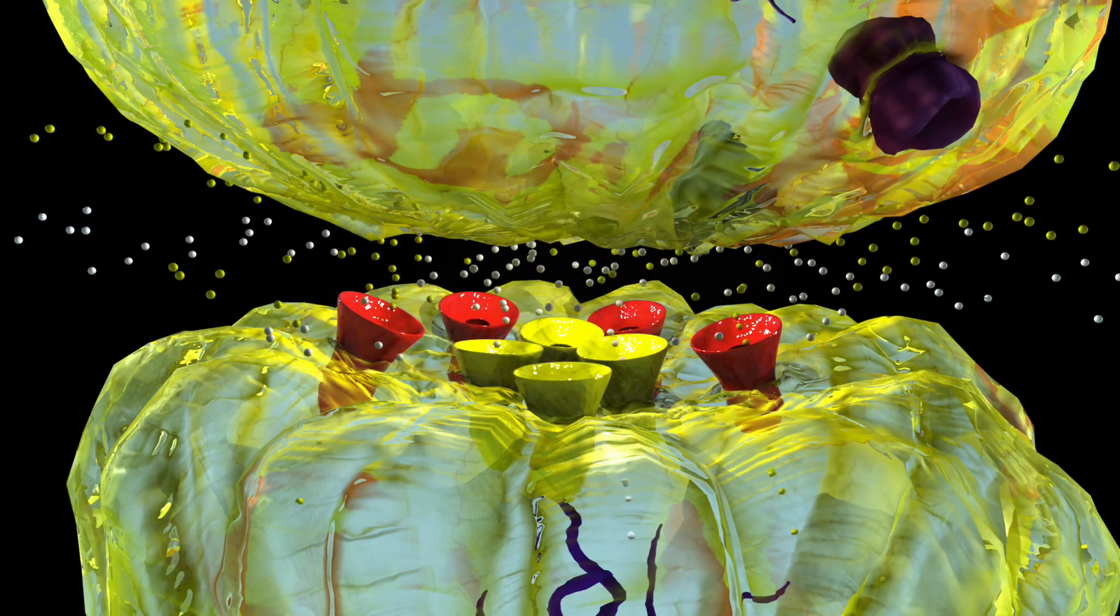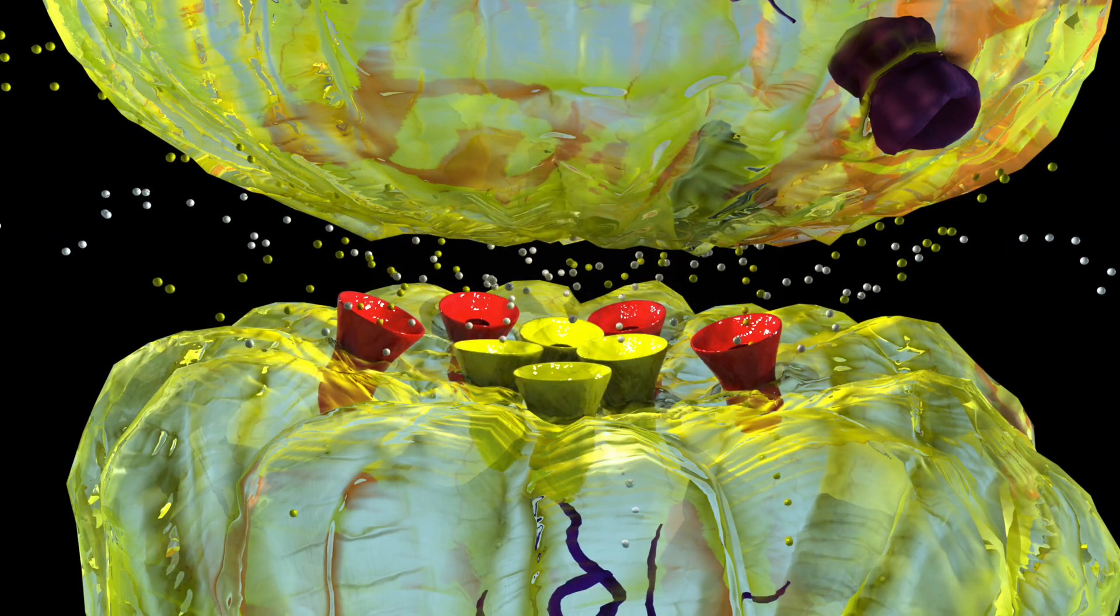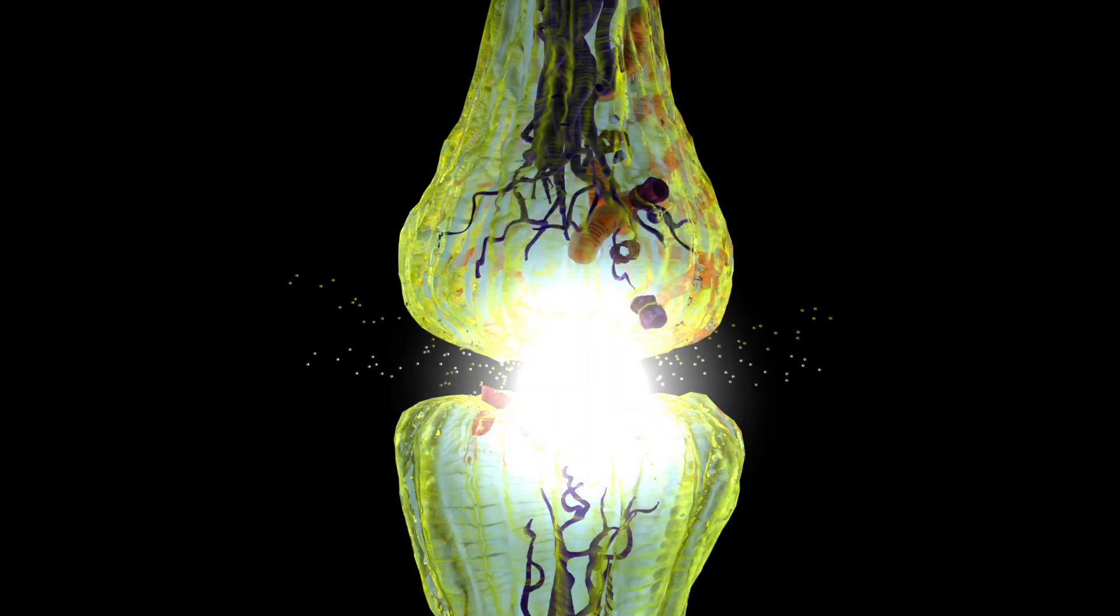With sodium and calcium entering the neuron, the electrical signal is transmitted throughout the brain.